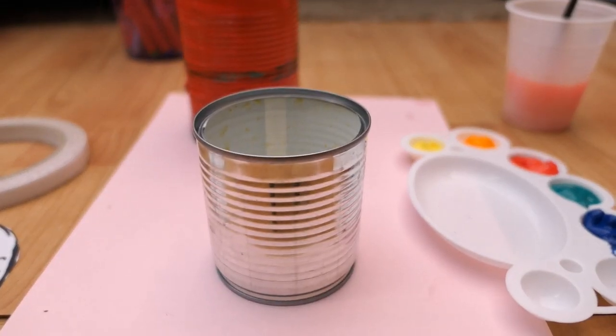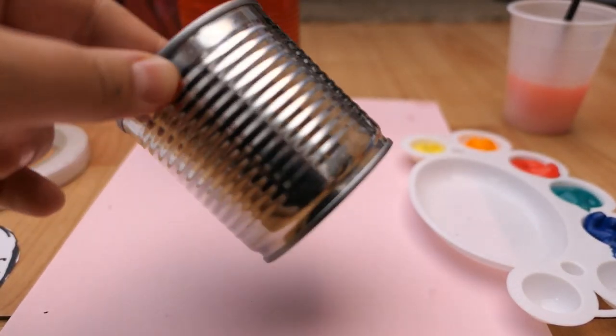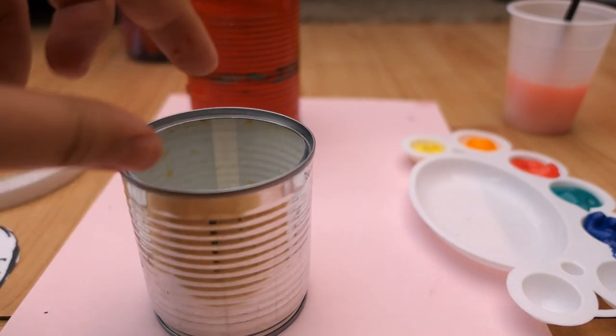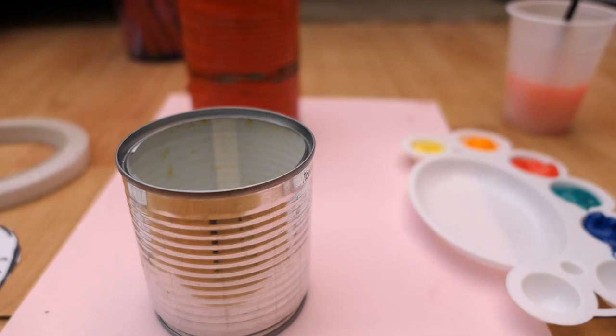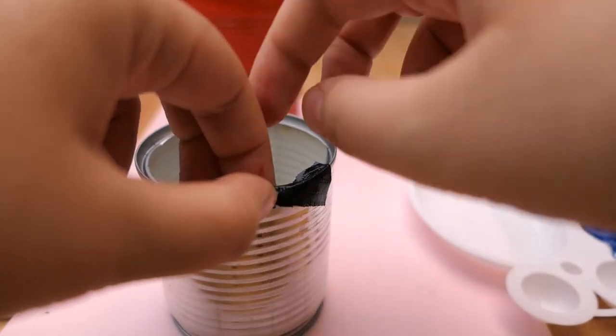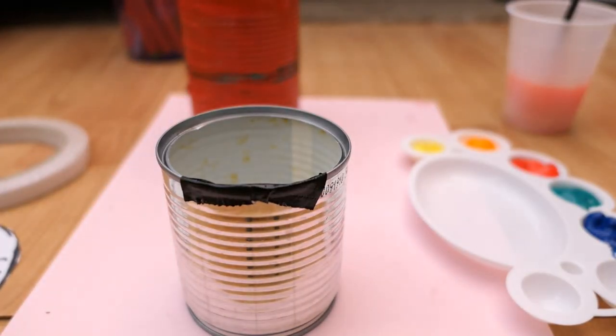Okay so with your other tin I've just got a small one from some sweet corn. I'm gonna do like a Winnie the Pooh theme. Again if you wanna put some tape around the rim just to stop your fingers from getting a cut because sometimes they can be quite sharp.